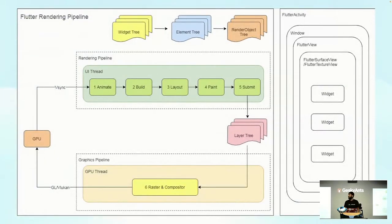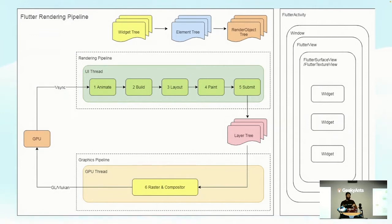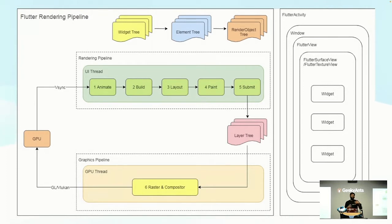Here is a complicated diagram showing how Flutter renders everything on the screen. At the top we have three trees: a widget tree, an element tree, and a render object tree. On the extreme right we have the UI showing a Flutter Activity, inside which we have a Window, a FlutterView, a FlutterSurfaceView, and inside the surface view we have widgets. On the left we have the rendering pipeline — things following one after another in a stream — giving us the final result on screen. Then we have the GPU and raster compositions.